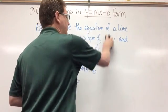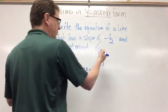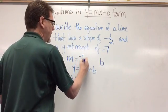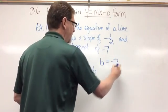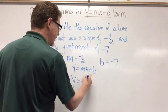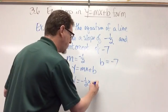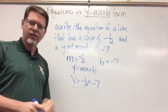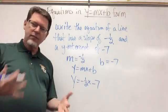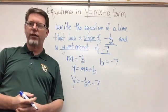What if the slope is negative one-half and the y-intercept is negative 7? M equals negative one-half and B equals negative 7. Plugging those in: y equals negative one-half X, and since B is negative 7, I write minus 7 instead of plus negative 7. The equation of the line is y equals negative one-half X minus 7.